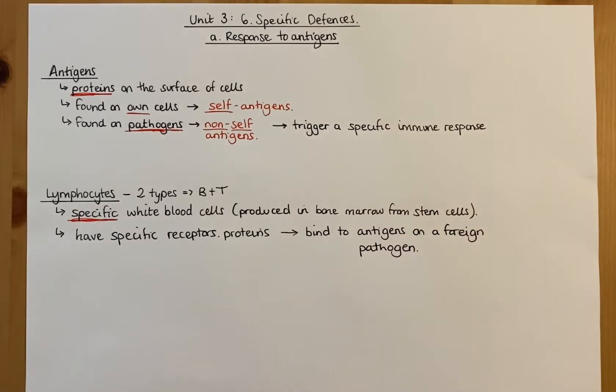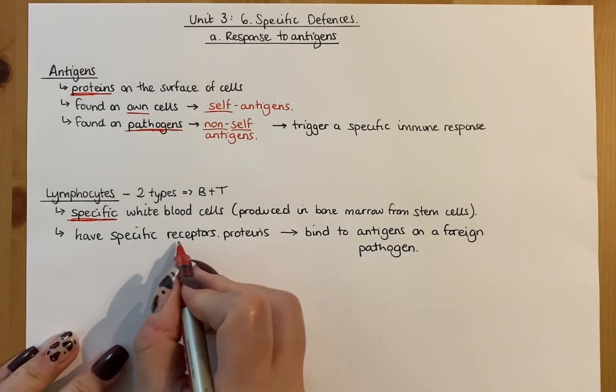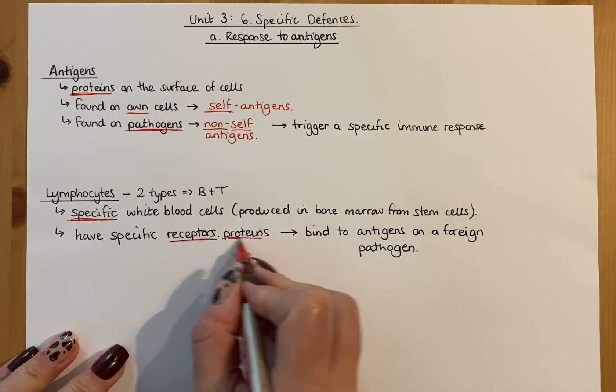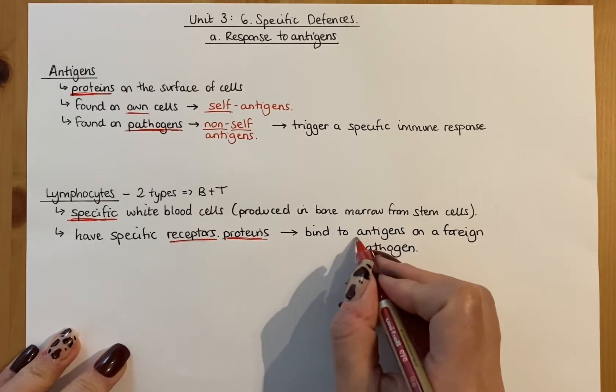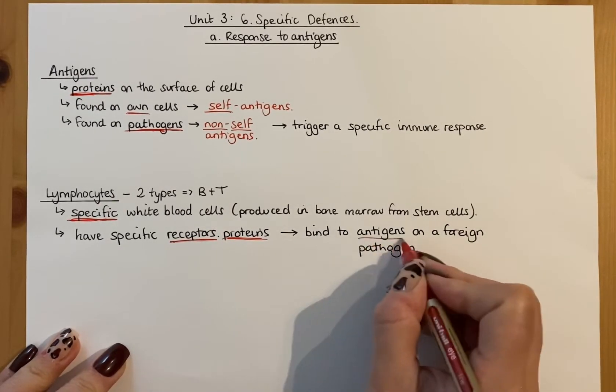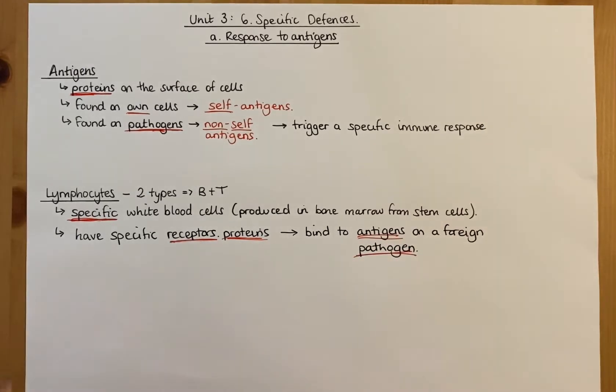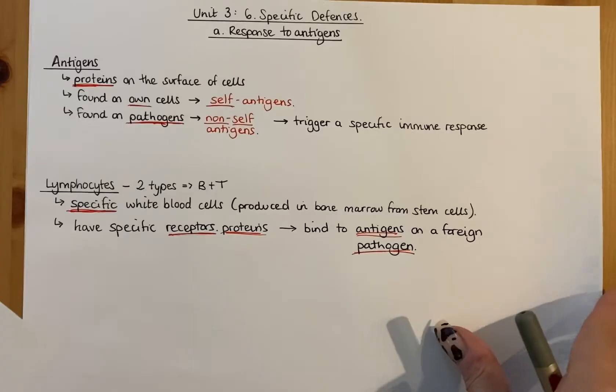Now with this topic and this part of the unit in general, there's a lot of words that sound quite similar. Antigen, pathogen, they sound quite similar and you really need to understand what they mean each. So these receptors on the outsides of the cells, these proteins, will bind to the antigens, those proteins on the outside of a foreign pathogen. This is a lot easier when you actually see a diagram of it and to see how this works.